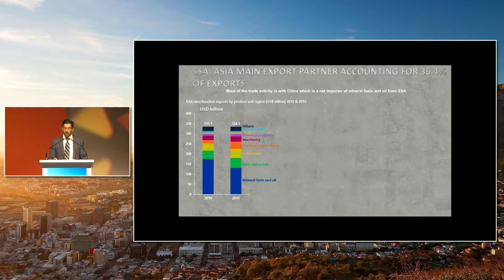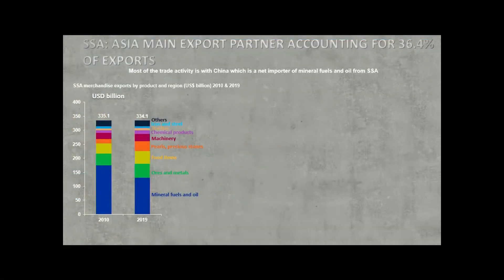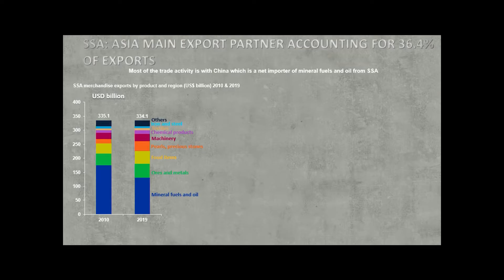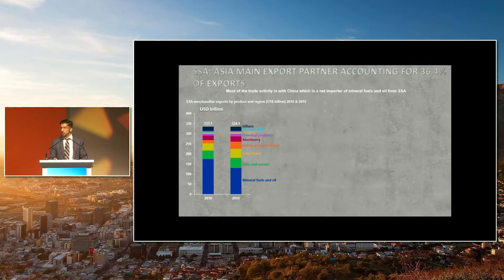Looking further into the composition beyond just fuels, you can see the dominance of the resources complex — ores and minerals, pearls and precious stones. It is a little comforting that within the last 10 years some manufactured items, such as machinery and food, are growing — but quite slowly. The shrinkage in mineral fuels and oil is mostly a price effect — lower prices fetched for fuels relative to 10 years ago — rather than a diminishing in the overall relevance of oil in the basket.